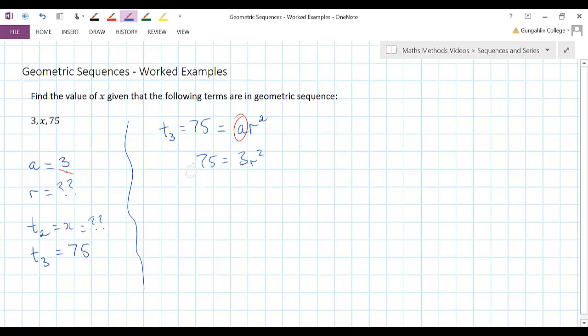Now if I solve this equation I should be able to find what r is, so let's do that. I'm going to divide by 3, and so 25 equals r squared, and then I'm going to take the square root.